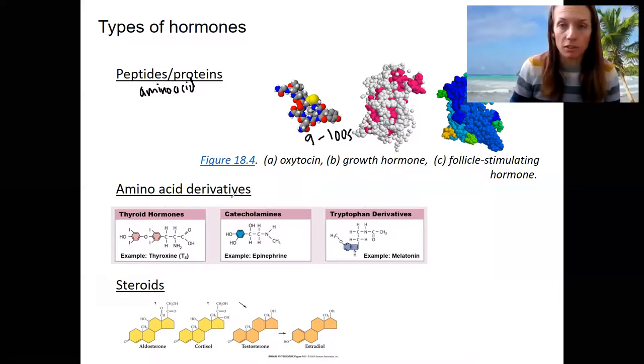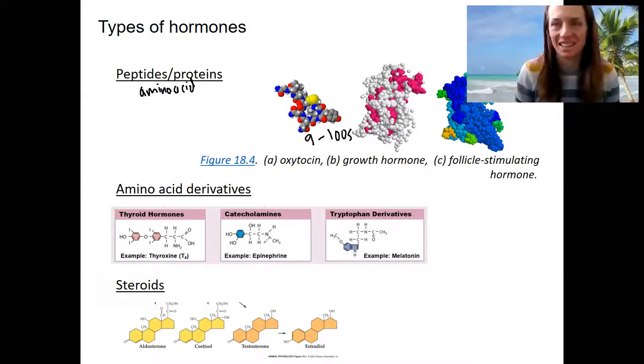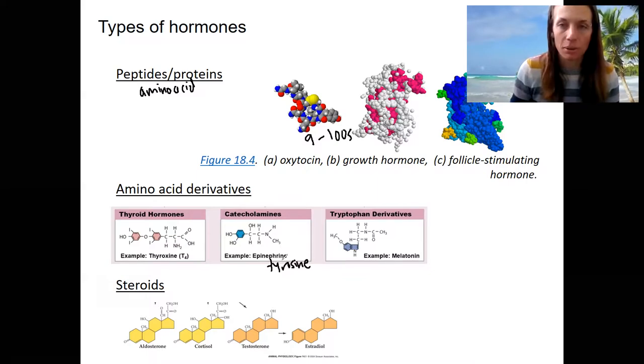Then we've got amino acid derivatives. So amino acid, that word's here too, but instead of being a link of amino acids, like peptide bonds linking them, these are derivatives of single amino acids. For example, epinephrine is a derivative of tyrosine. Tyrosine is an amino acid. One tyrosine can be derived into epinephrine versus linked tyrosine, more tyrosine, leucine, serine. Those are all amino acids that can make up a peptide.